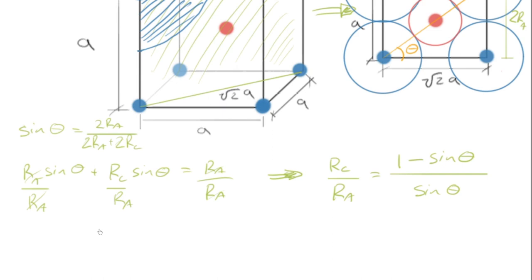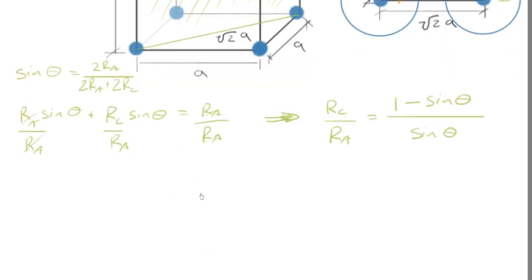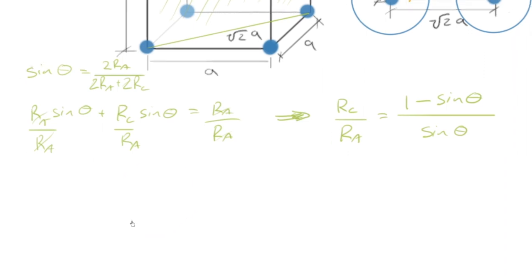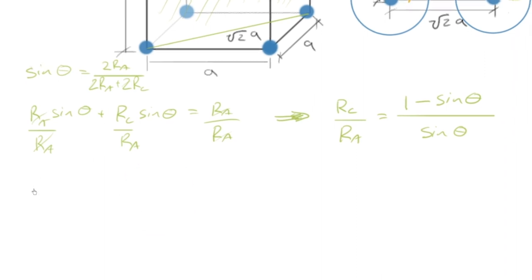So what we end up with is RC over RA is equal to one minus sine theta over sine theta. And finally, what is theta?